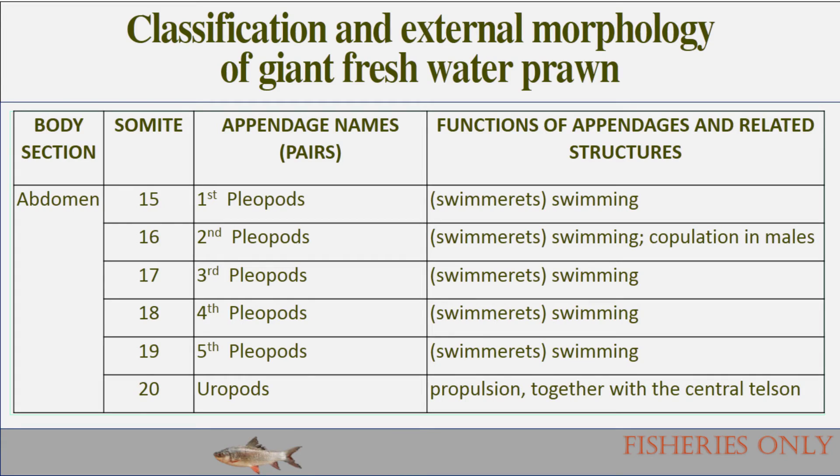The abdominal segments bear pleopods: the first pleopod is the swimming leg or swimmeret, helpful for swimming. The second pleopod is helpful in swimming, and in males it consists of the appendix masculina, helpful in transferring sperm during copulation. The third, fourth, and fifth pleopods are the 17th, 18th, and 19th segments, all helpful in swimming. The 20th segment is the uropod, mostly used for propulsion together with the central telson, forming the tail fan which facilitates sudden backward movement of the prawn.